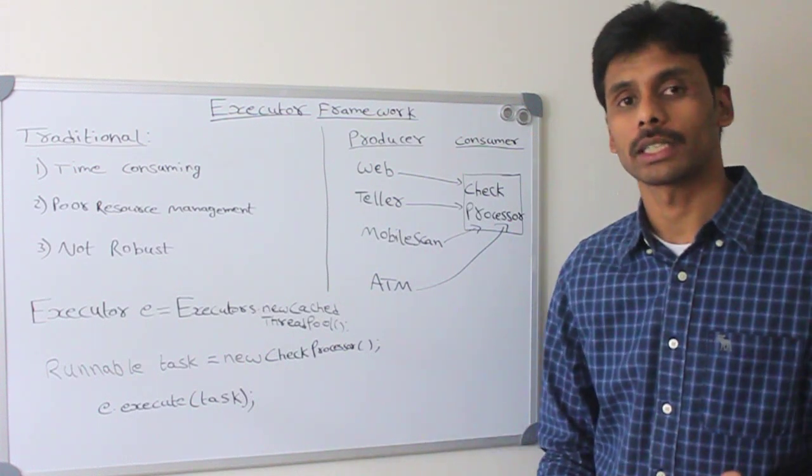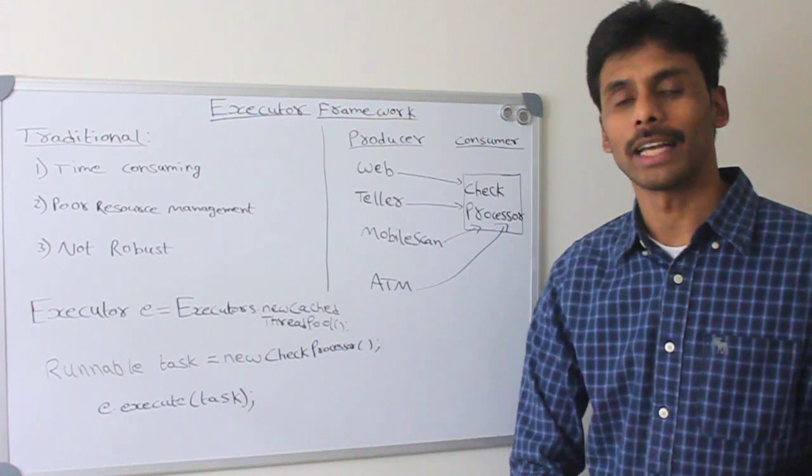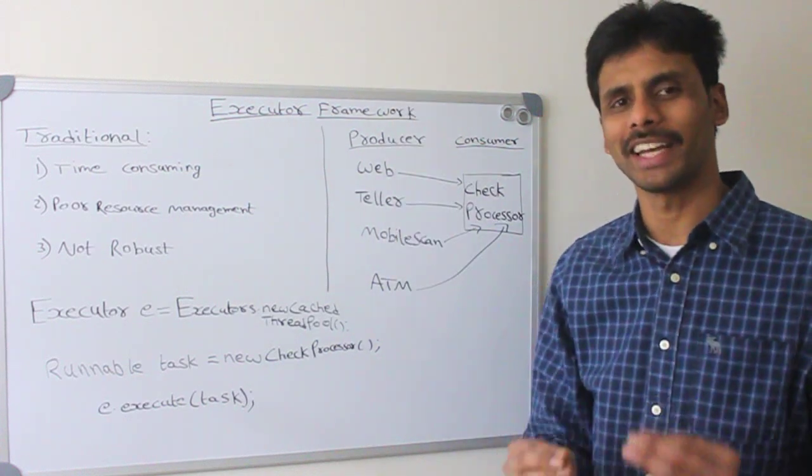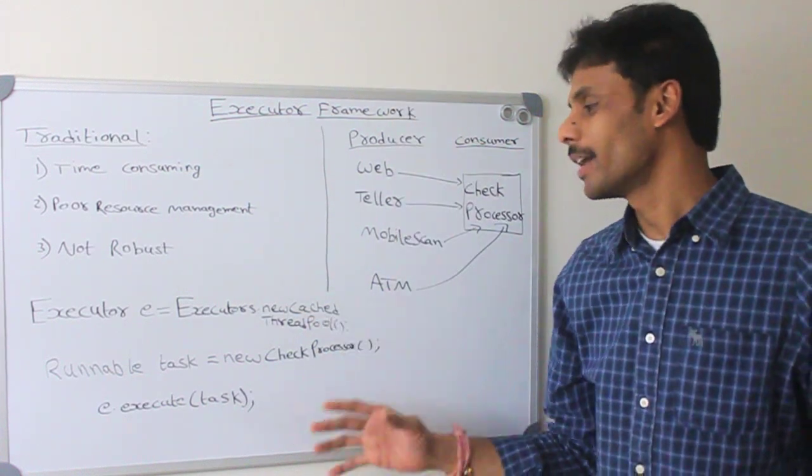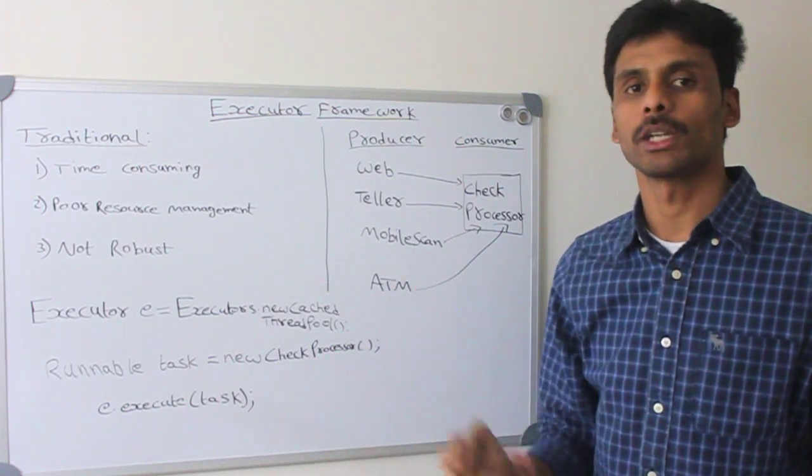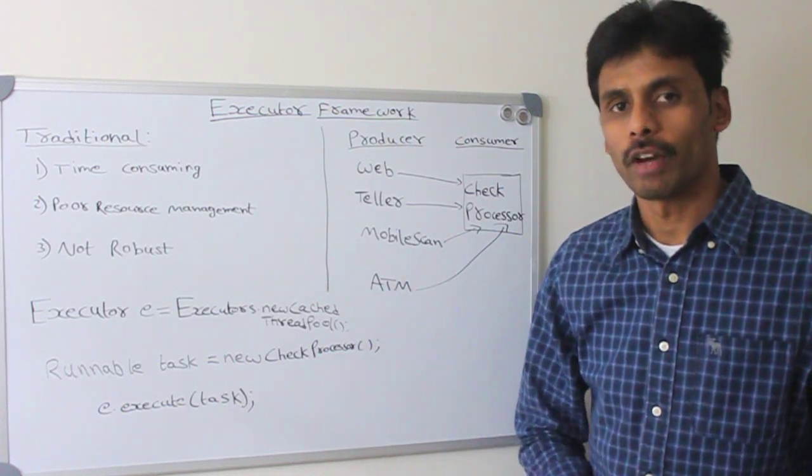And when the next set of checks comes in, that thread can immediately take those and start working. So we have multiple threads working. The concepts of multi-threading remains the same except we have pool of threads and everything like the life cycle is managed by the executor framework for us.